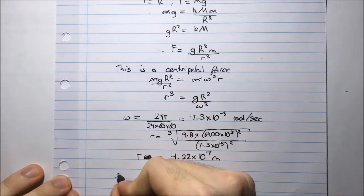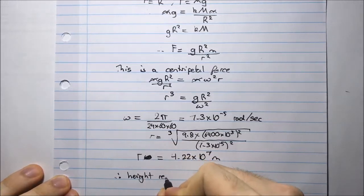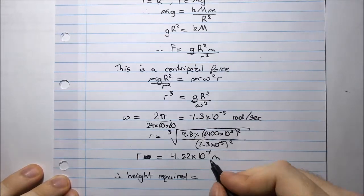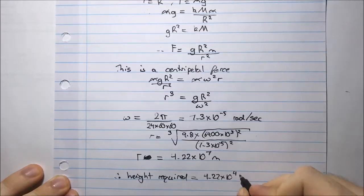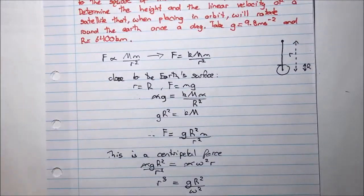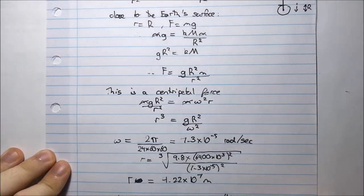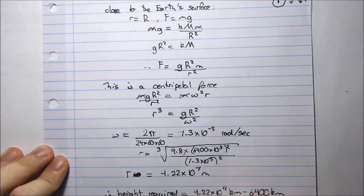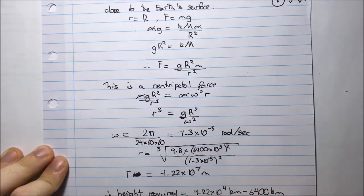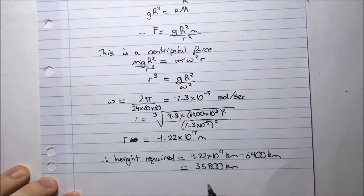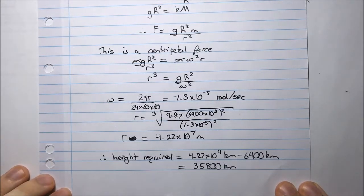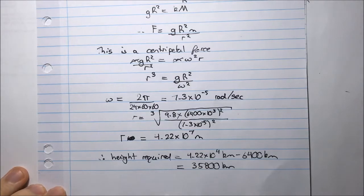Therefore, the height required would be, if I converted this to kilometers, would be 4.22 times 10 to the 4 kilometers, minus the radius of the Earth, which is 6400 kilometers, which is about 35,800 kilometers above the surface of the Earth. So that's the height required to have an orbit around the Earth of period, or time taken, of one day.